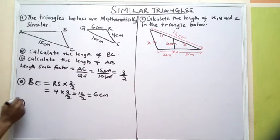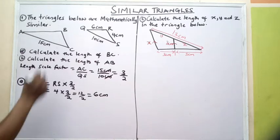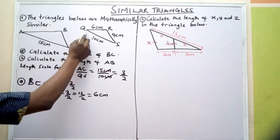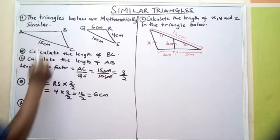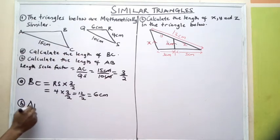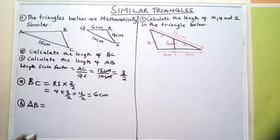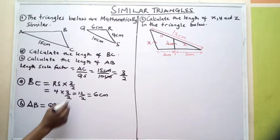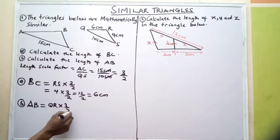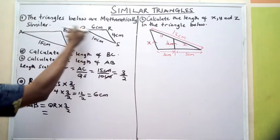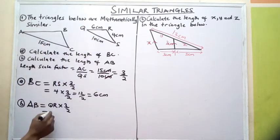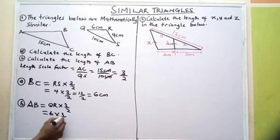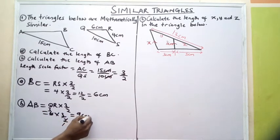Part B says we should calculate the length of AB. AB — we want to move from the smaller corresponding side to the larger corresponding side. So I have QR times 3 over 2: 6 times 3 over 2, which is 3 times 3, giving me 9 cm.